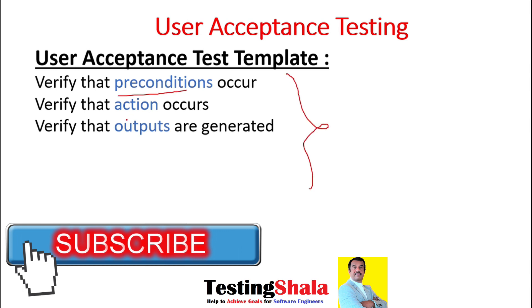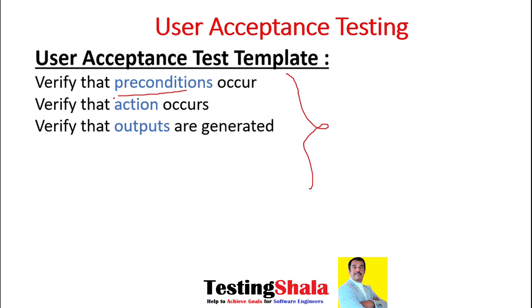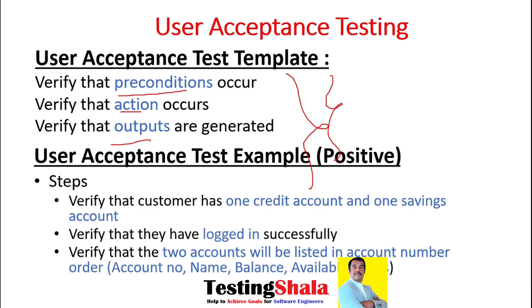The test case should go through the precondition, followed by an action and an output. This is the template of a user acceptance test case. We will now see the positive test cases for the same acceptance criteria.